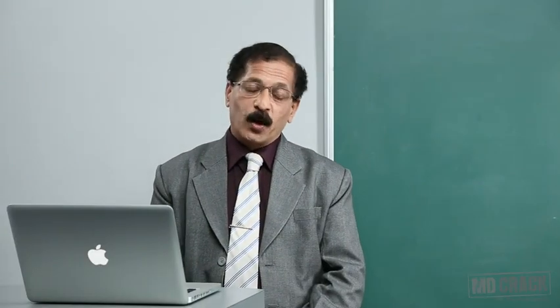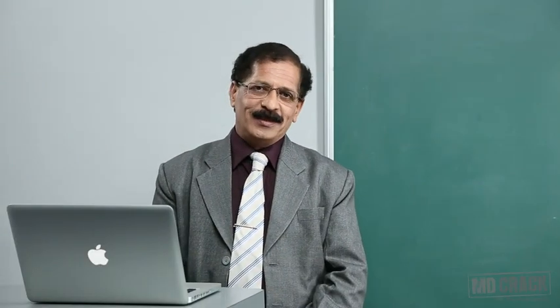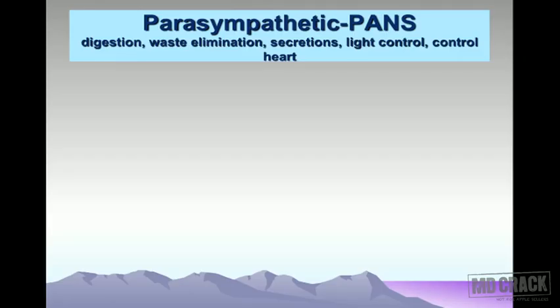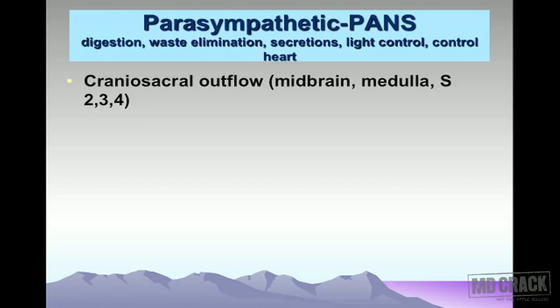Welcome. We are here to discuss the cholinergic system, roughly equaling the parasympathetic nervous system, also called PANS — the parasympathetic autonomic nervous system — which takes care of your baseline functions like digestion, waste elimination, secretions, control of light going on to the retina, and controlling the heart.